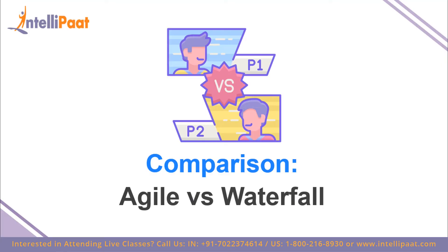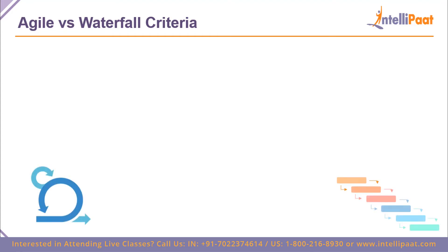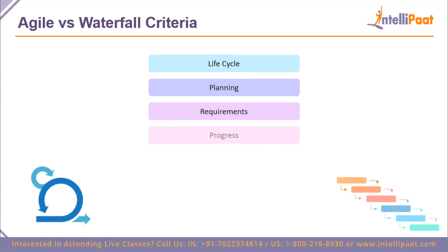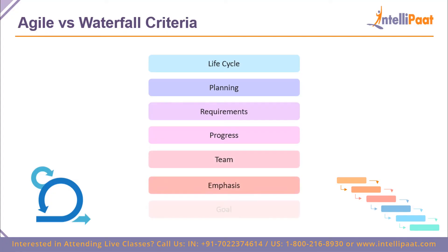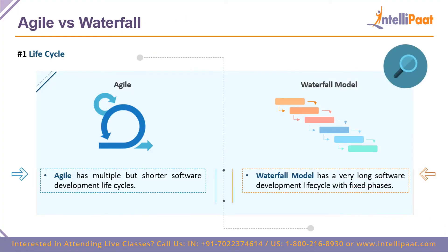Now let's look at the comparison of agile and waterfall, using criteria of: life cycle, planning, requirements, progress, team, emphasis, and the goal of each methodology. On life cycle: agile has multiple shorter life cycles, whereas waterfall has a very long one. The benefit of a shorter life cycle is very evident — you can adapt to the market and have transparency with customers. With waterfall, you have a very long process, but it has its own benefits — it's easily managed and useful where you don't need to compete in the market.